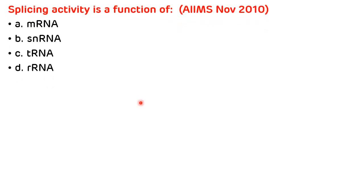Second question from AIIMS November 2010: splicing activity is a function of which RNA? Options are messenger RNA, small nuclear RNA, transfer RNA, and ribosomal RNA. As discussed, splicing of mRNA is done by small nuclear RNA. The correct answer is B.